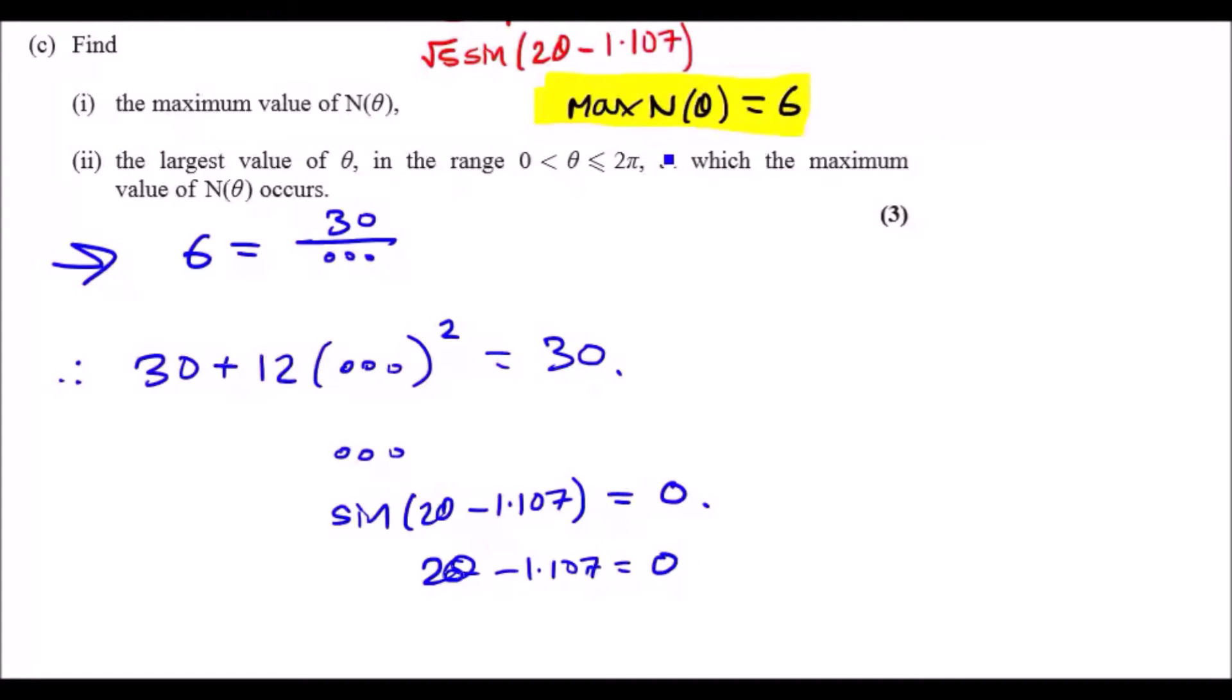Okay, so that's when you subtract, play and so on, and then sine inverse that. Sine inverse 0, I know for sure, is 0 degrees. So 2θ minus 1.107 equals 0 radians. And then to find the maximum, it's probably best to use the sine diagram, the CAST diagram.